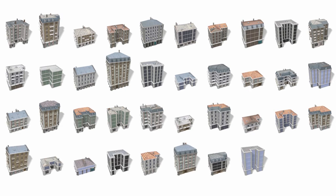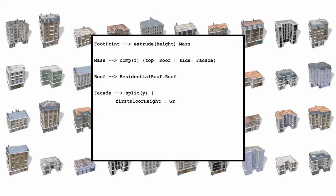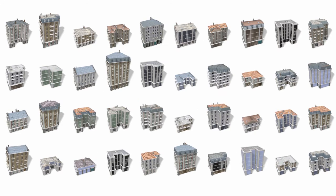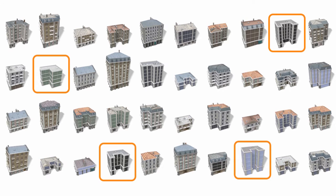Procedural modeling is a good way of generating a large variety of buildings to fill our city, but it requires programming skills to create or modify grammars. Even if we use existing grammars, we often want to extract only a subset of the models that the grammar can produce in order to satisfy design objectives.